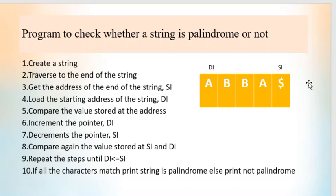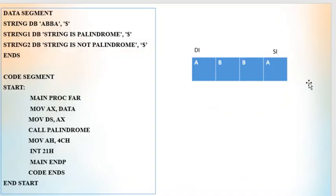Let us see the program. We are writing a main function and a procedure called palindrome which will be called within the main program. This is the data segment. Inside the data segment we have our string to be checked: string defined byte 'aba' dollar. This dollar symbol is used for denoting the end of the string. String1 is defined byte 'string is palindrome'. String2 is defined byte 'string is not palindrome'. So this is the data segment.